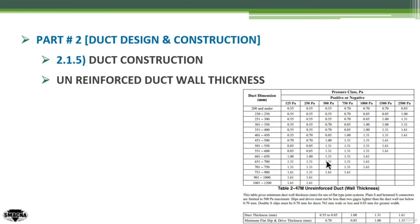The note under this table states that it gives the minimum duct wall thickness in mm. Use of flat joint systems — plain S and hem C connectors — is limited to 500 Pascal maximum. Slip and drives must not be less than two gauges higher than the duct wall, and not below 0.7 mm. Double S slip must be 0.7 mm for ducts 762 mm wide or less, and 0.85 mm for greater widths.